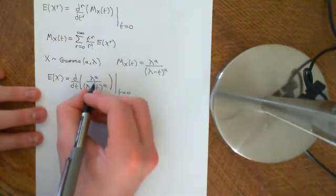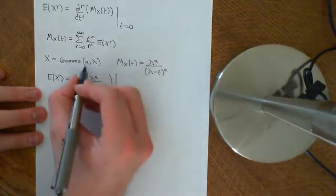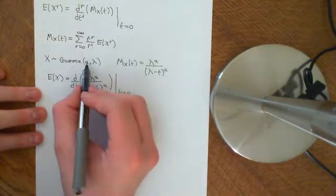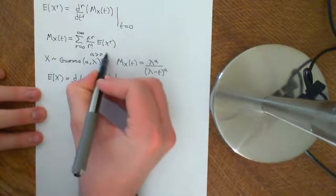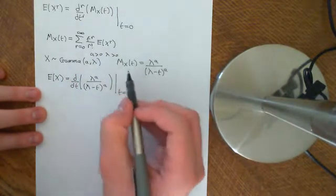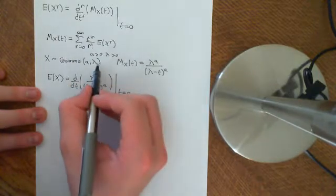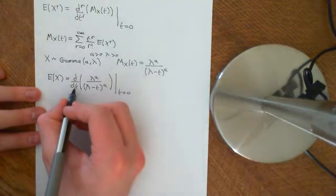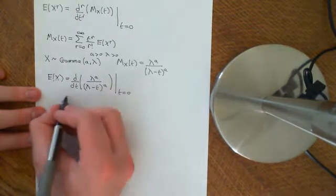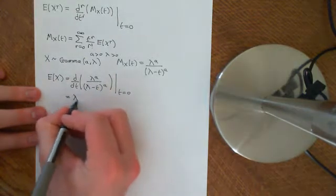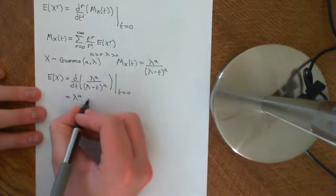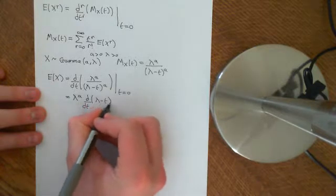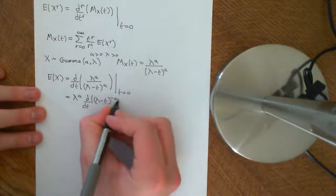So λ to the power of a is just a constant — λ is some parameter, a is some parameter, they are fixed. We're doing it in full generality, but as far as differentiating with respect to t is concerned, they are fixed. So pull out λ to the power of a, and then what we want to do is take the derivative with respect to t of (λ minus t) to the power of negative a.